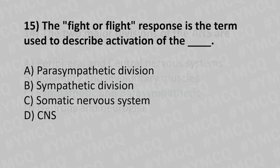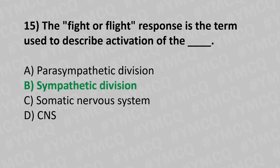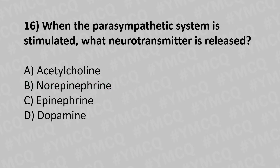Moving to our fifteenth question. The fight-and-flight response is the term used to describe the activation of dash. Option A: parasympathetic division. Option B: sympathetic division. Option C: somatic nervous system. Option D: CNS or central nervous system. And the answer is option B: sympathetic division.